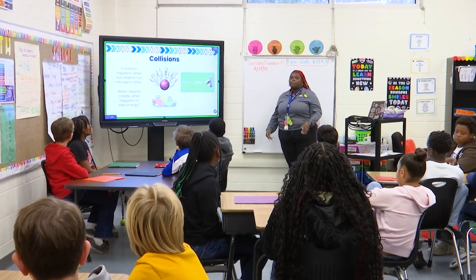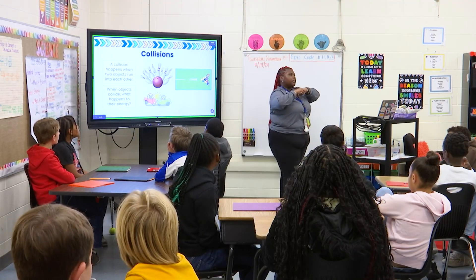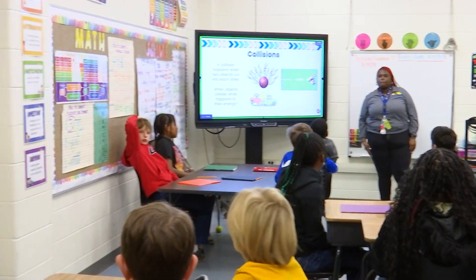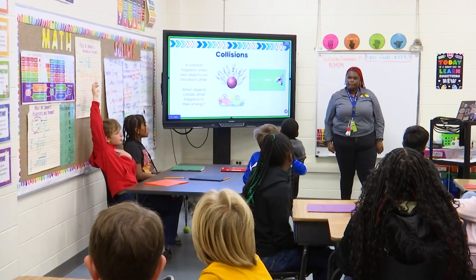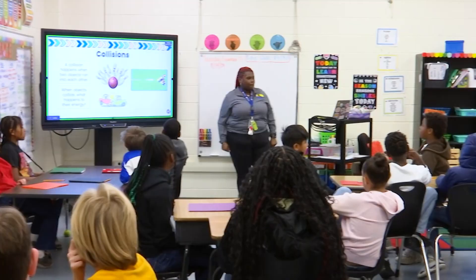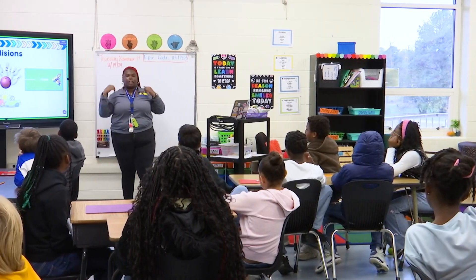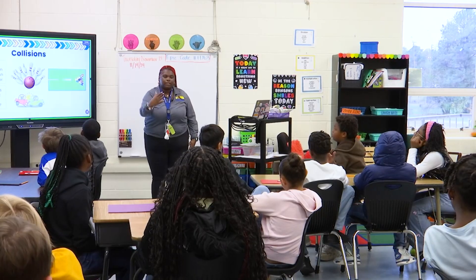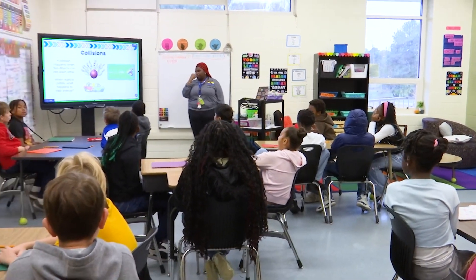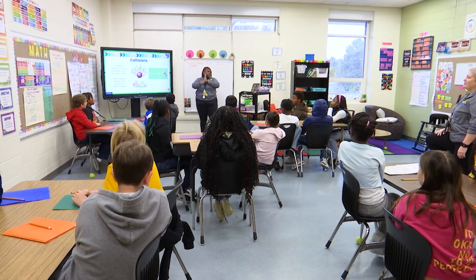A collision happens when two objects run into each other. When objects do run into each other, what happens? Austin: the energy bounces back. Okay, the energy can bounce back. Luke: they can fall over or it breaks. So things might fall over or something could break. Aiden: if you don't have your seatbelt on, the car stops but you keep going — the seatbelt stops you from colliding into the seat in front of you. Christopher: when two things collide, it can force each other to stop. Good.